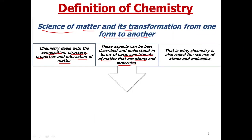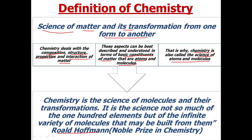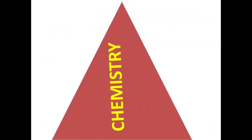So we can say that chemistry is the science of atoms and molecules. Roald Hoffman, who is a Nobel Prize winner in chemistry, has defined chemistry as the science of molecules and their transformations. He says it is a science not so much of 100 elements but of the infinite variety of molecules that may be built from them. So if we look around ourselves, chemistry is involved everywhere.